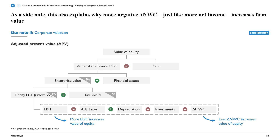If you've ever taken corporate valuation classes, you may know that in the adjusted present value approach, for example, you have this kind of weird line item — delta networking capital — and if it's more negative, that happens to be positive for the value of the equity. And it's just not really that clear why this is the case.